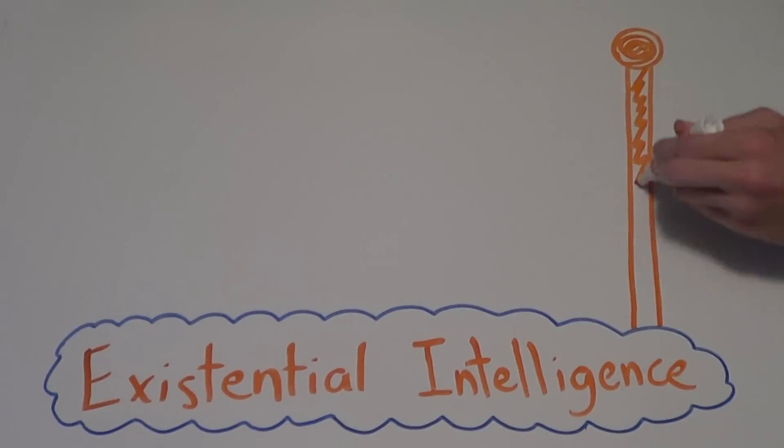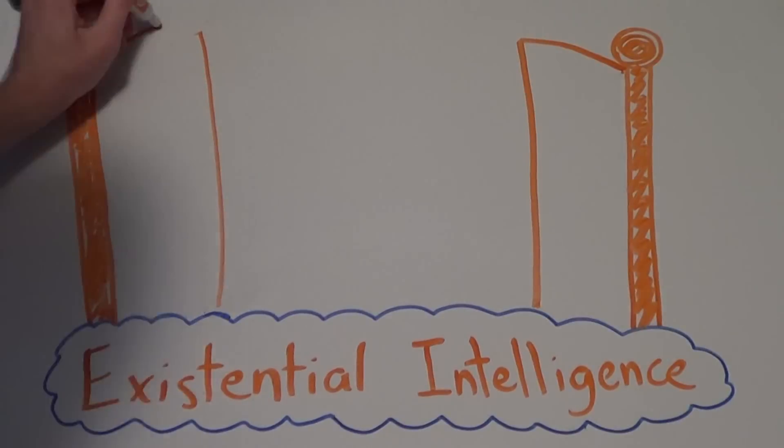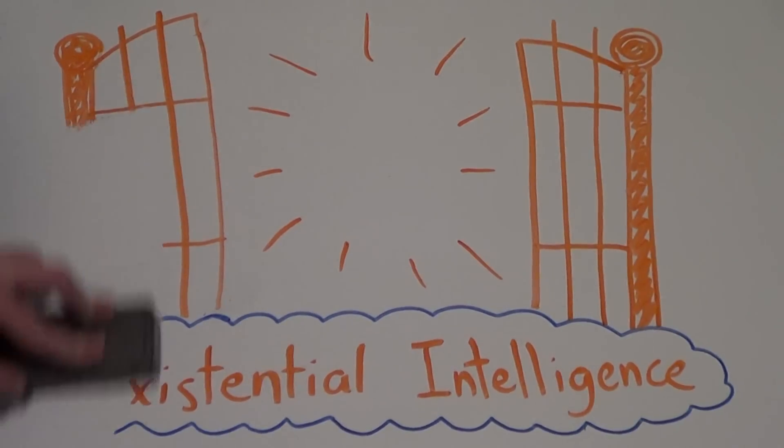Finally, existential intelligence is the sensitivity and capacity to tackle deep questions about human existence. Spiritually smart people like Pope Francis have a philosophic love of learning and a much higher level of mental comprehension.